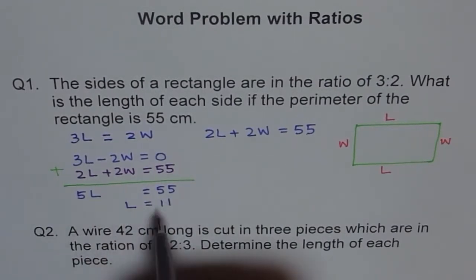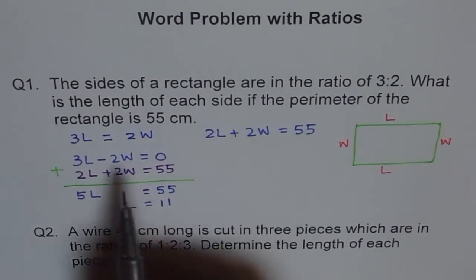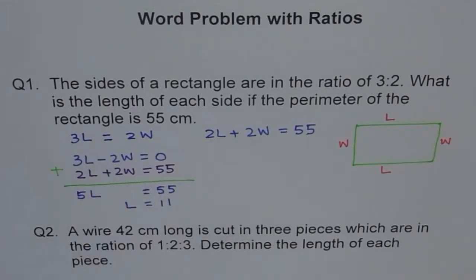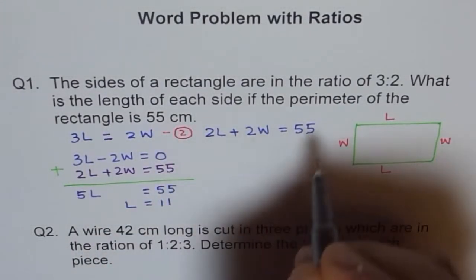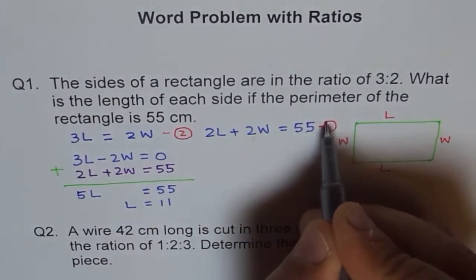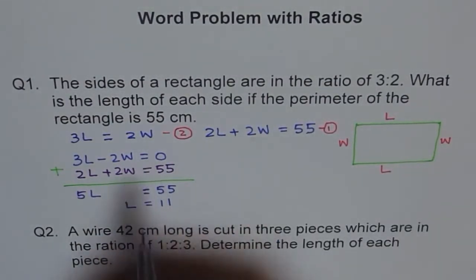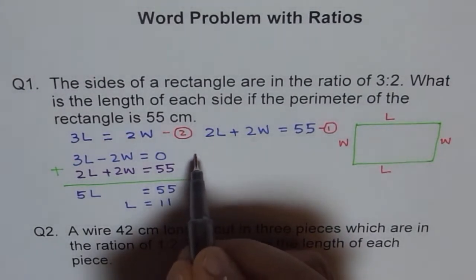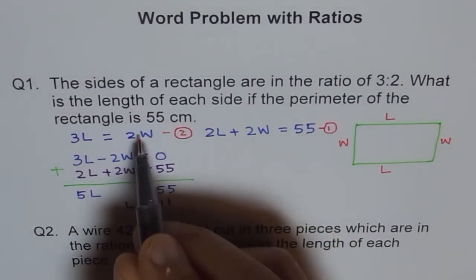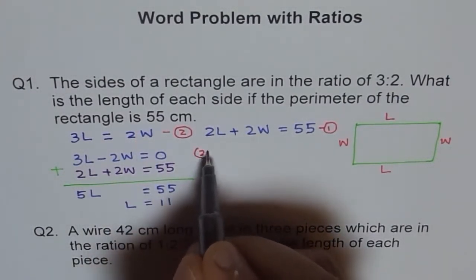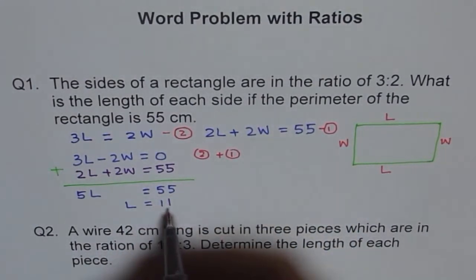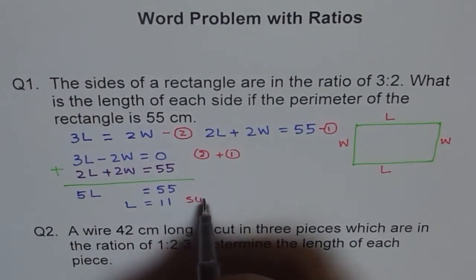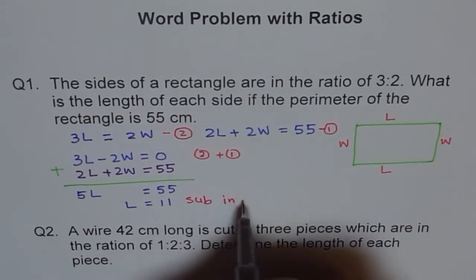If we divide both sides by 5 we get length equals to 11. So if the length is 11, we can substitute this in our very first equation. It's a good practice to write equation numbers also. Let me write this as 2 and let me write this as 1. So what did we do here? Here we added 1 and 2. Let me say added 2 plus 1, and we got this. And from here we got L as this, so we will sub this in equation 2 and find W.